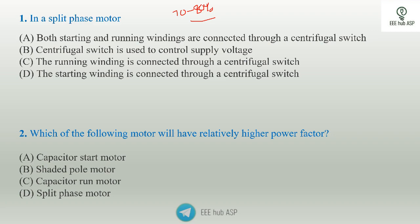Option D. The starting winding is connected through a centrifugal switch.